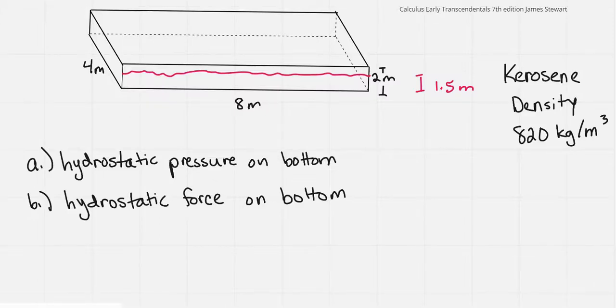So in this problem, we have a tank that's a rectangular prism shape, and the width is four meters, the length is eight meters, and the height of the tank is two meters.